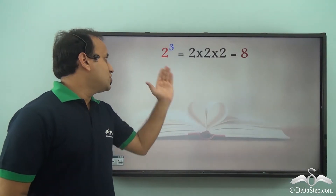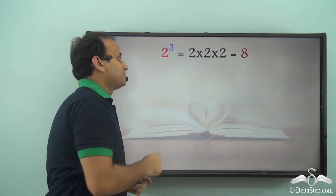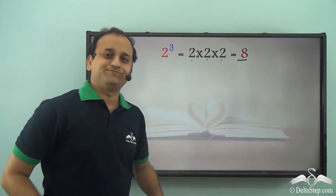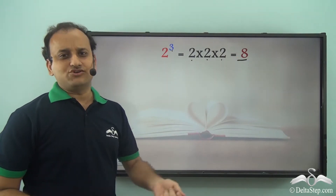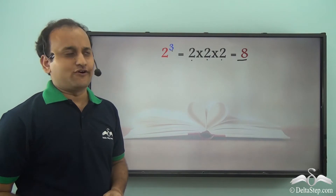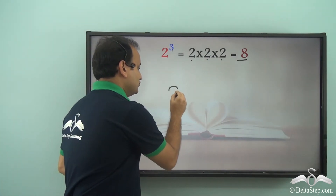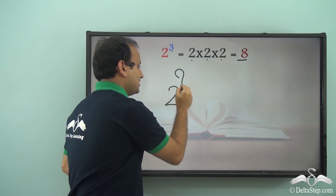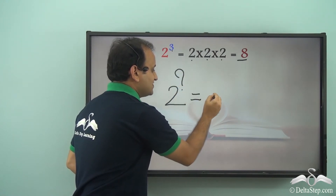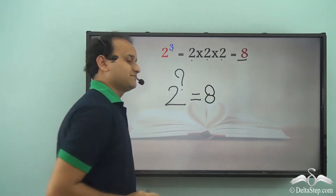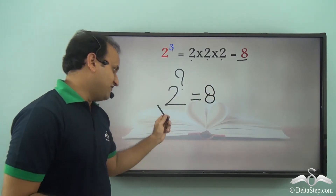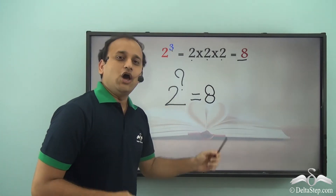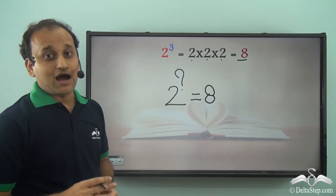We have 2 to the power of 3 — that is, 2 × 2 × 2 — which equals 8. Now if we write this in question form: '2 to the power of what is equal to 8?' — this becomes a logarithmic equation.